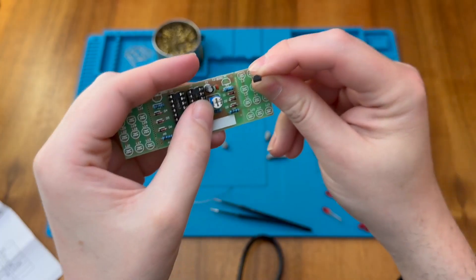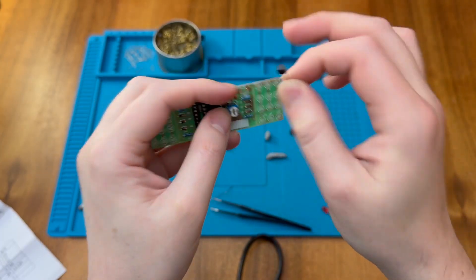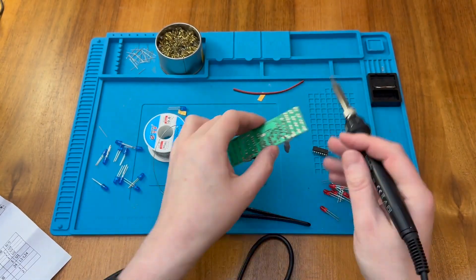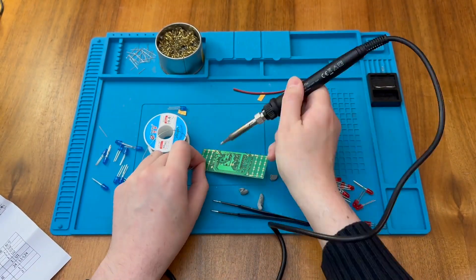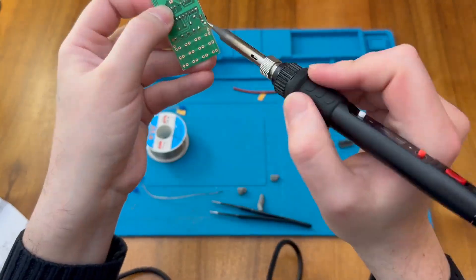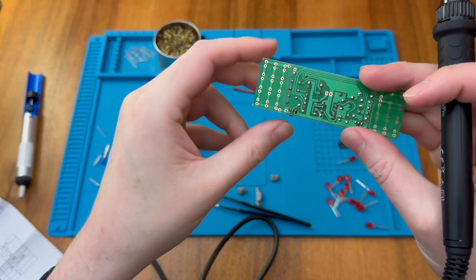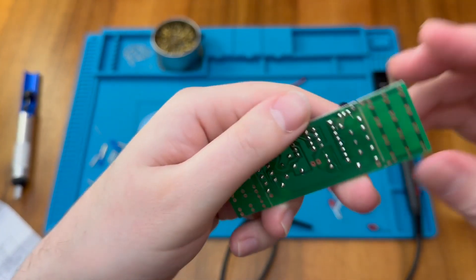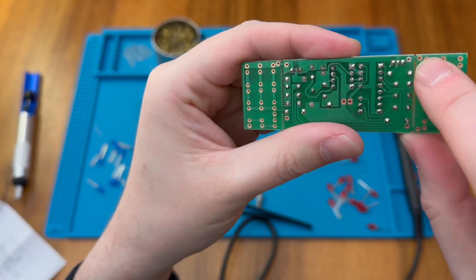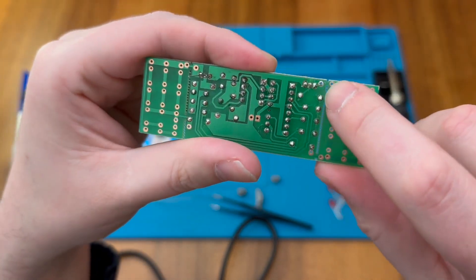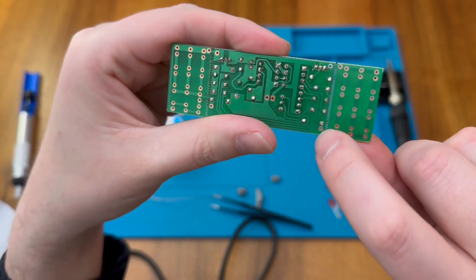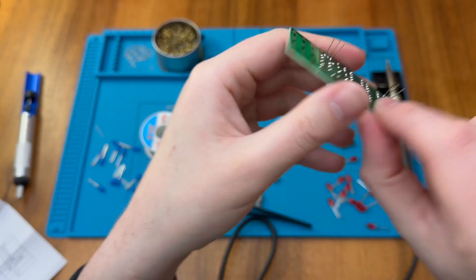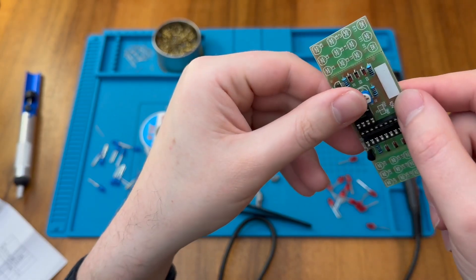So I think those are the pads we would use if we were to break off these side wings here. So if we break off these side wings, we would end up needing to solder some wires for these pads here and for this pad here over to there as well.